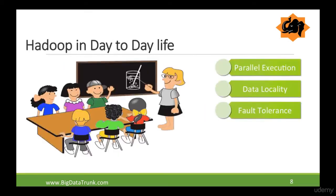The third principle is fault tolerance. In scenario one if the teacher is absent, the whole act of collecting papers comes to a stall. But in scenario two if somebody else can put the answers on the whiteboard, the corrections could happen by the kids themselves and the system would continue. Similarly, Hadoop addresses fault tolerance through a mechanism called replication. Hadoop keeps every single data file as three copies — two backup copies plus the original. So if one node goes down, other nodes have the same data, allowing processing to continue. This makes the overall system fault tolerant while individual nodes may go down.